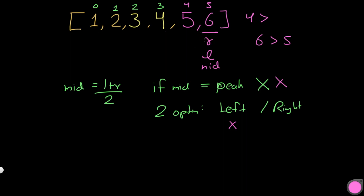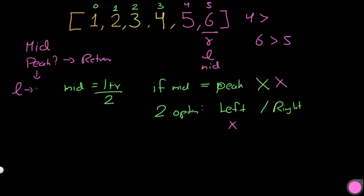To summarize the binary search logic: first find mid, then check if it's a peak. If it is, return mid directly. If not, move the left pointer if nums[mid - 1] is greater than nums[mid]. Otherwise, move the right pointer if nums[mid + 1] is greater than nums[mid]. Let's see this in code.